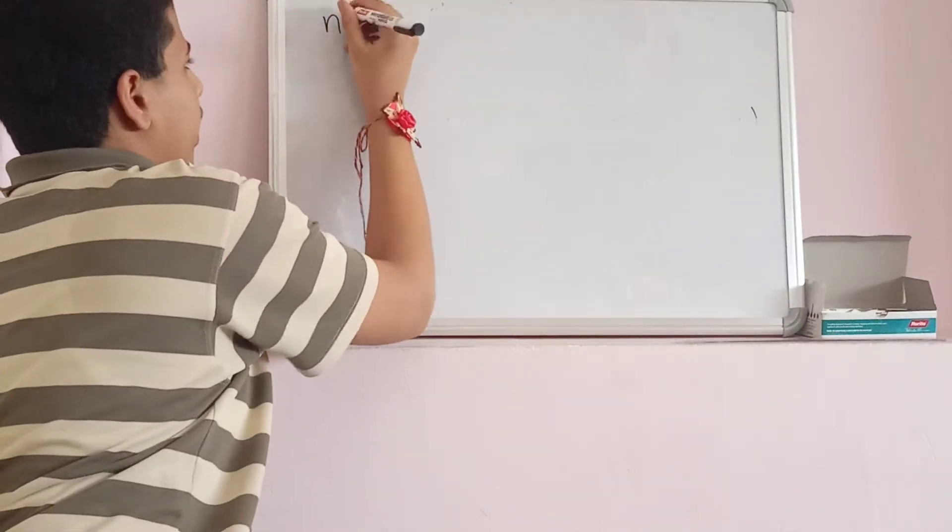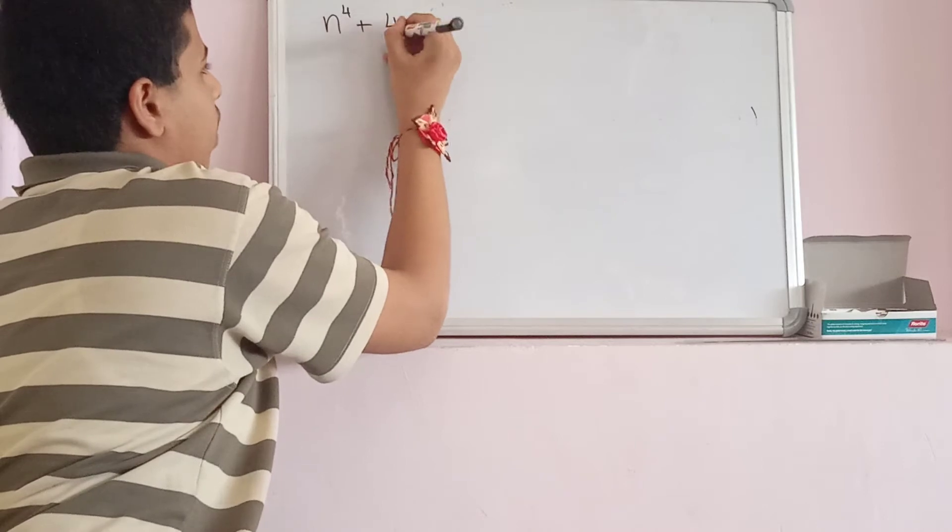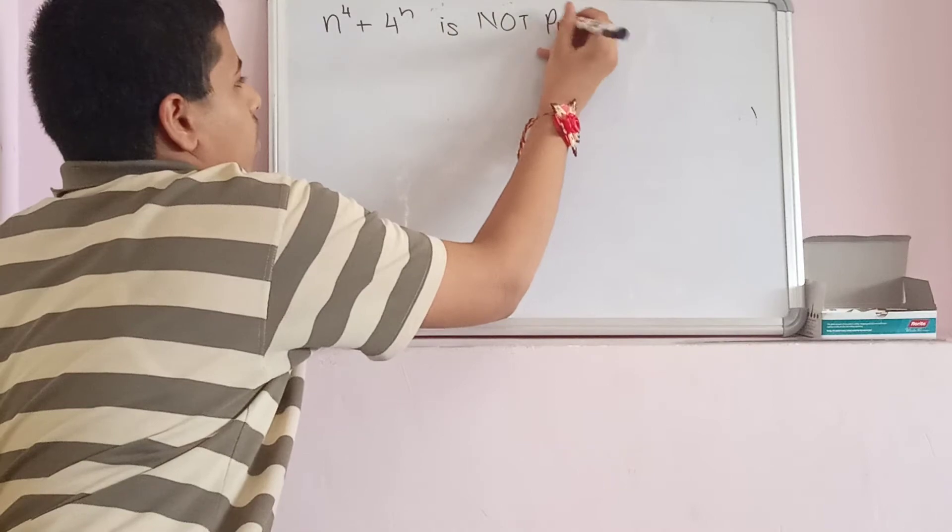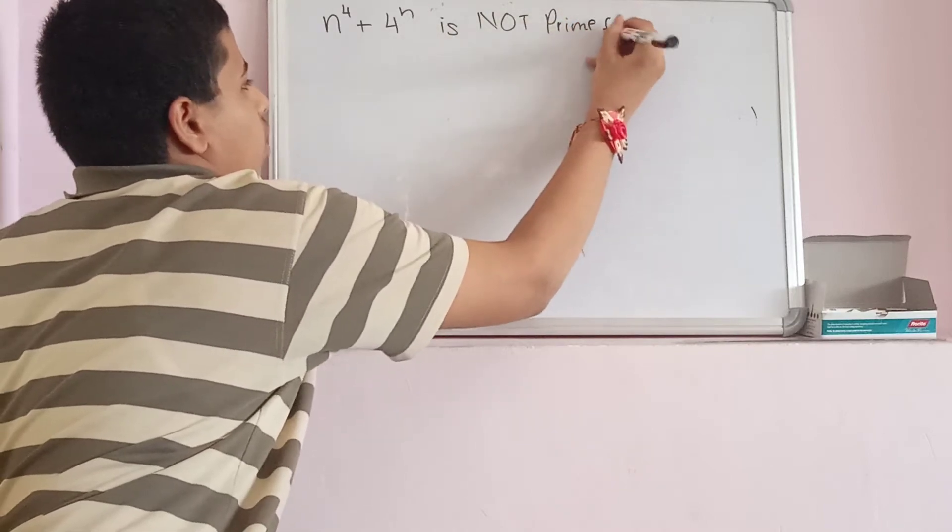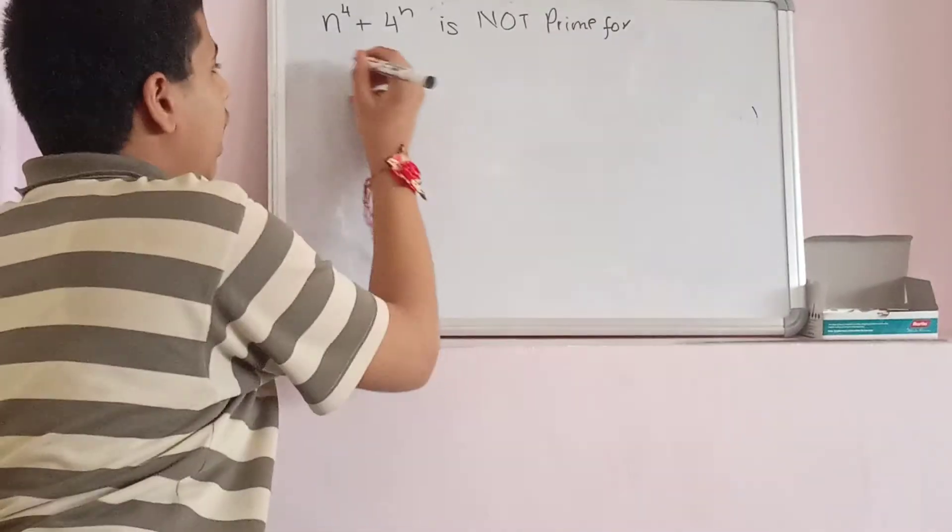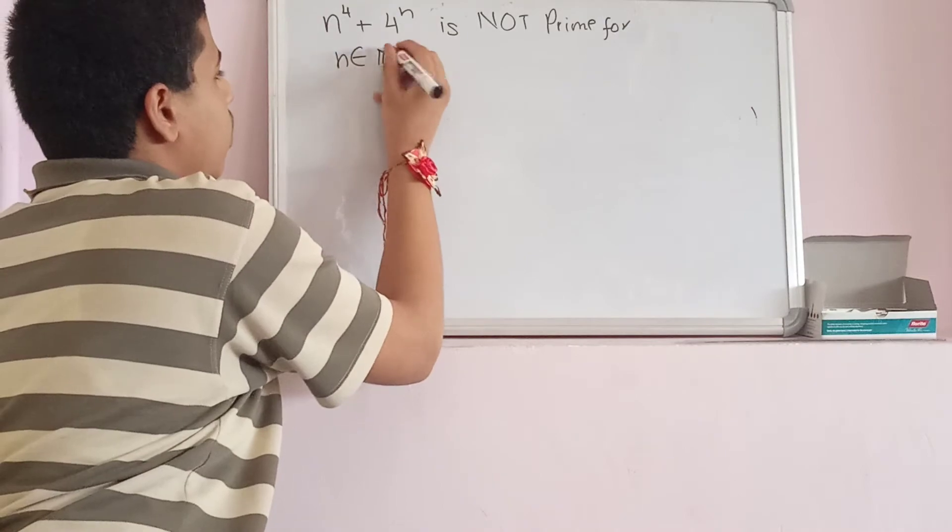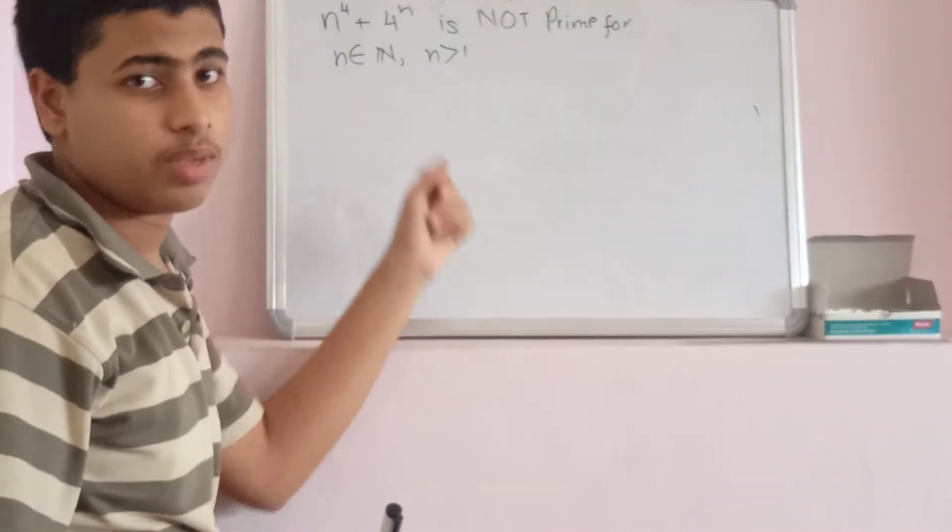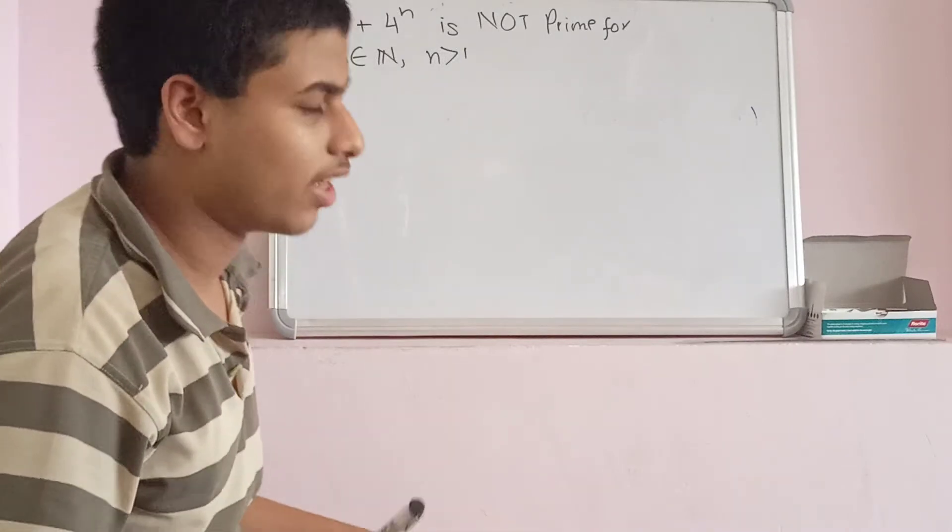Let's prove n^4 + 4^n is not prime for all n belong to natural numbers and greater than 1. Because when you put 1 in that, you get 5 which is a prime, so that's an exception in that case.